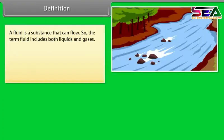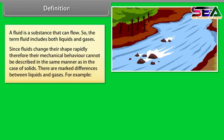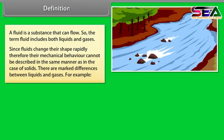Definition: A fluid is a substance that can flow, so the term fluid includes both liquids and gases. Since fluids change their shape rapidly, their mechanical behavior cannot be described in the same manner as in the case of solids. There are marked differences between liquids and gases.